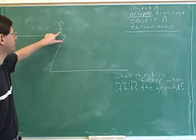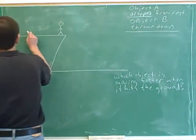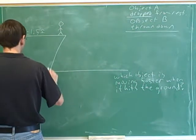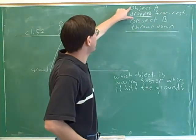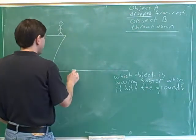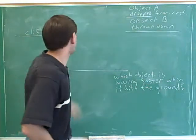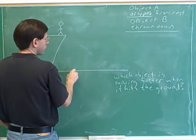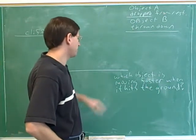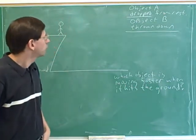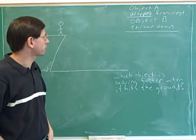Again, we have a person standing on a cliff. Here's the person standing on the edge of a cliff, and here's the ground. Let's consider two possible experiments. The person could drop an object from rest — let's call that object A. Or instead of dropping it, they throw it down at the ground — that's object B. The question is: which object is going to be moving faster when it hits the ground? Object A, which was dropped from rest, or object B, which was thrown down from the cliff?